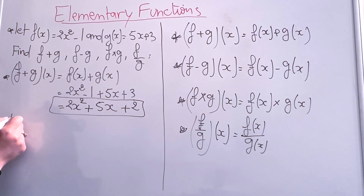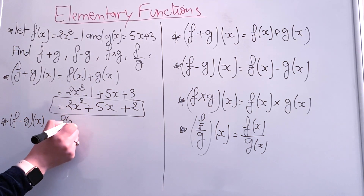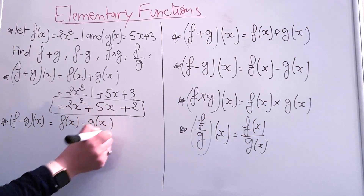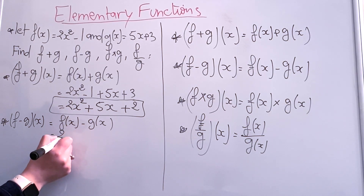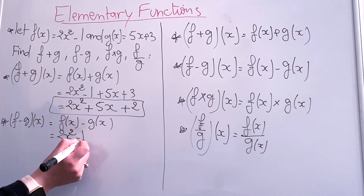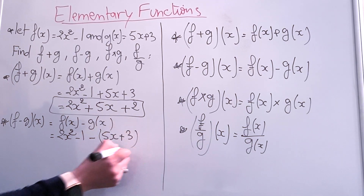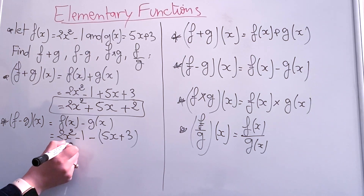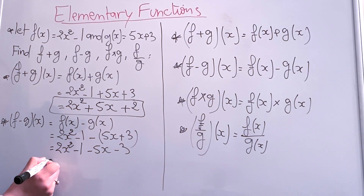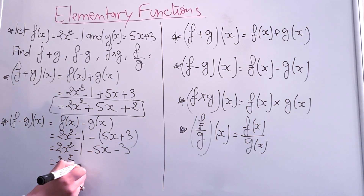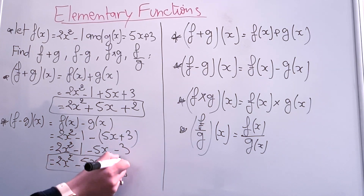Now let's find f minus g of x. That equals f(x) minus g(x). We replace each one: f(x) equals 2x squared minus 1, minus g(x) which is 5x plus 3. This gives us 2x squared minus 5x minus 4.